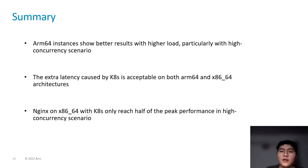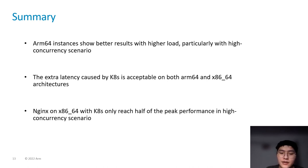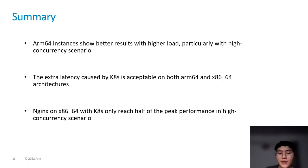Here is our summary. First, ARM instances show better results with higher load, particularly in high-concurrency scenarios. Second, the extra latency caused by Kubernetes is acceptable on both ARM and x86. Third, nginx on x86 with Kubernetes only reaches half the peak performance in high-concurrency. The next part will be Dave's.